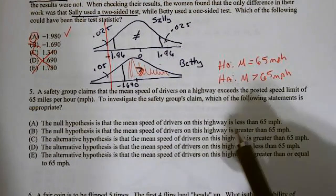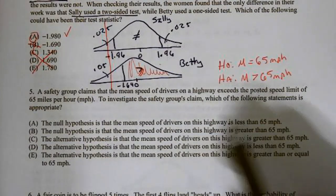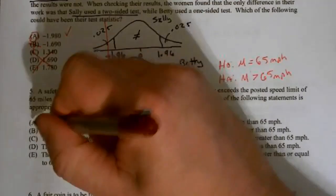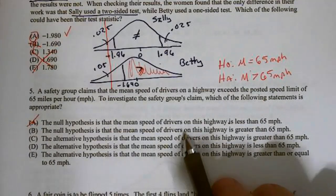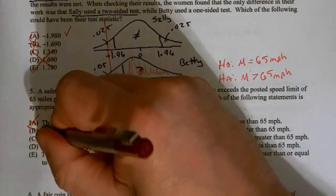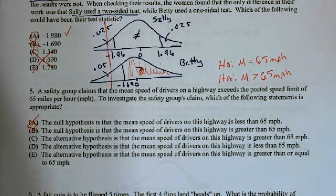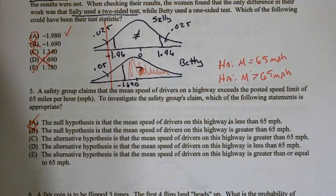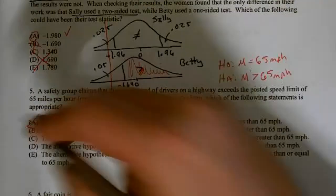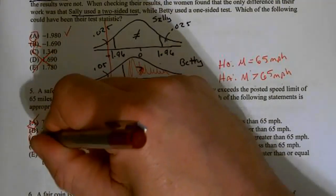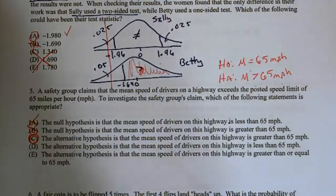The null hypothesis is that the mean is less than 65? No, the null is that it's equal, so that one's false. The null hypothesis is the mean of the drivers is greater than 65? No, it's always equal for AP statistics. The alternative hypothesis is the mean of the drivers is greater than 65? Well, there's our alternative, it's greater. That's our answer. The answer to number five is C.